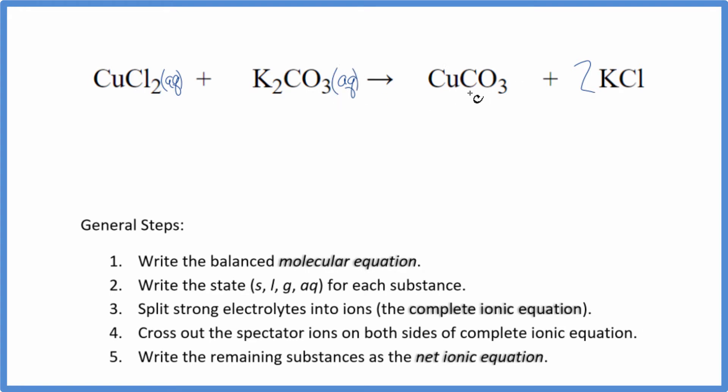But copper carbonate, carbonates often aren't soluble. Potassium, that's an exception, but copper carbonate is going to be insoluble. That means it's going to have S here because it's a solid. It doesn't dissolve. In fact, when these two react, it's going to fall to the bottom of the test tube. It's a precipitation reaction. Potassium compounds, again, very soluble. So we have the states.